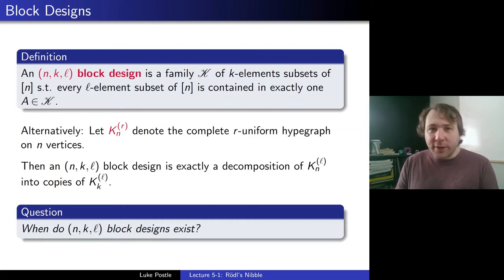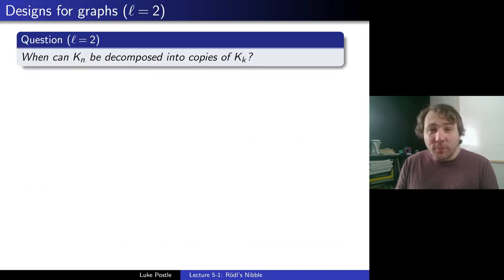Well before getting to the general problem, let's look at the specific case when ℓ=2. When ℓ=2, this is simply graphs. So when can K_n be decomposed into copies of K_k? So this would be the question when ℓ=2. It's quite a natural graph theory question.